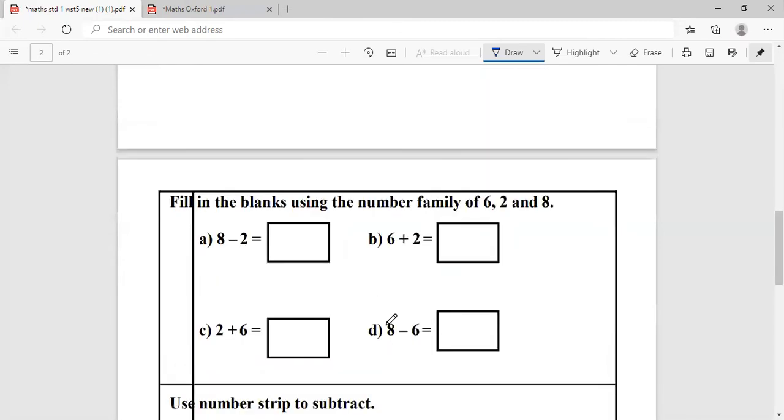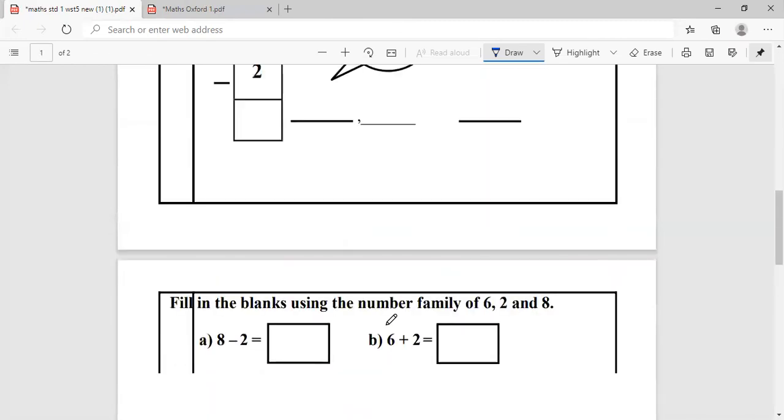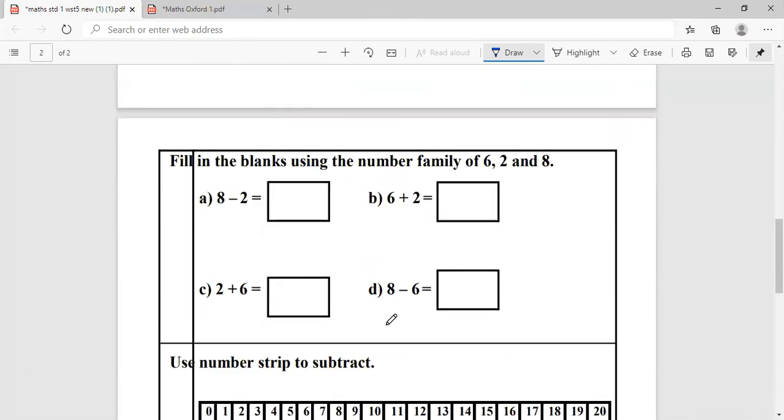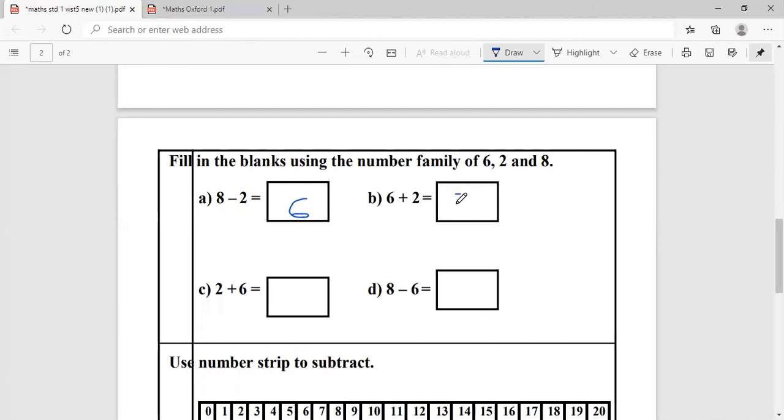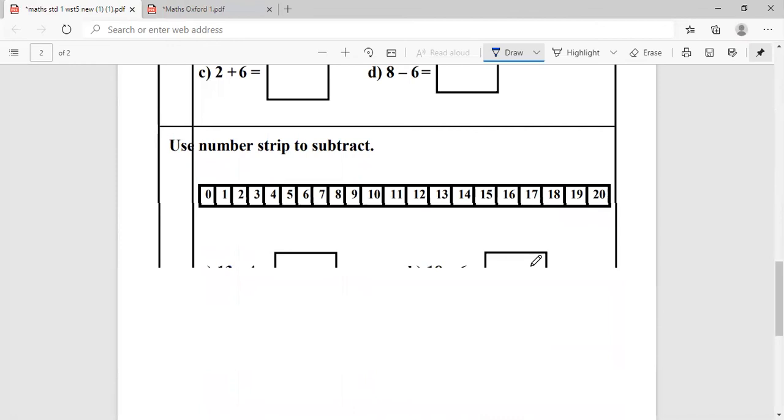Let's go to this page. Fill in the blanks using the number family of six to eight. You have this all done right. Six to eight. Eight minus two, six. Six plus two, eight. You do the remainder.